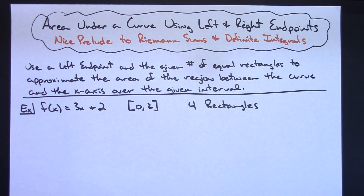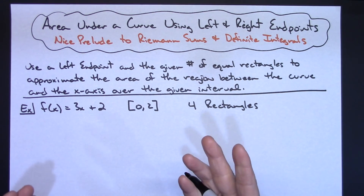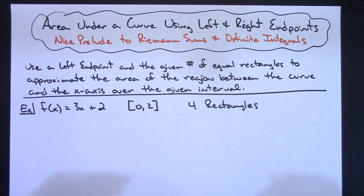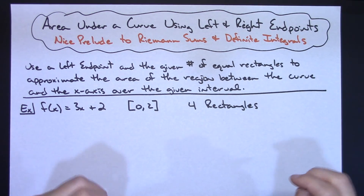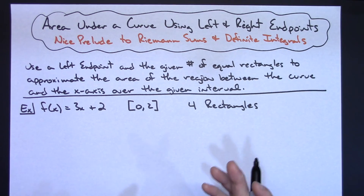In this video I'm going to be focusing on the area under a curve using left and right endpoints — just referring to them as left endpoints or right endpoints, playing around with this idea and seeing how we can estimate that area under a curve. Generally this makes for a really nice prelude to getting into the Riemann sum and definite integrals, looking at what this looks like, how it estimates the area, and what kind of estimates you get — underestimates, overestimates, that sort of thing.